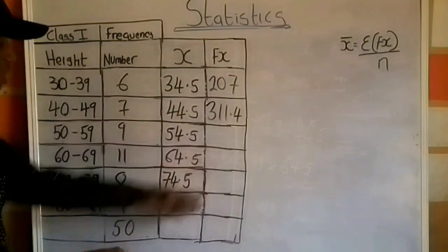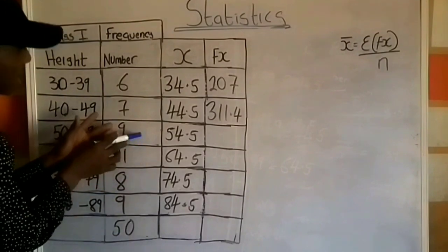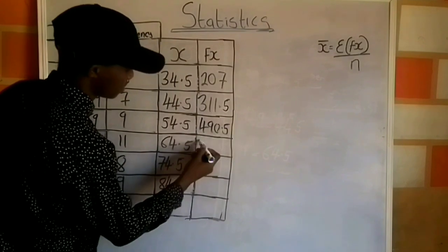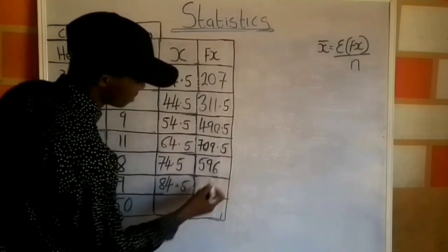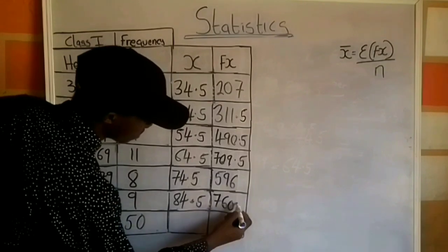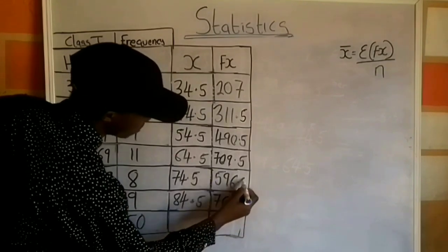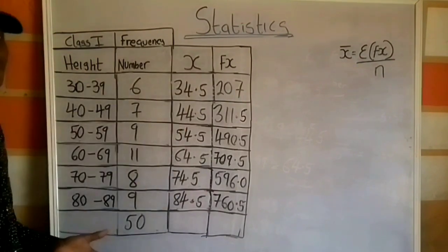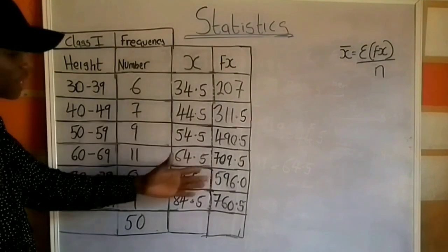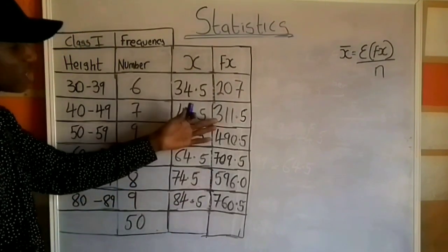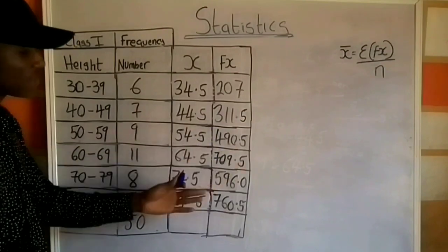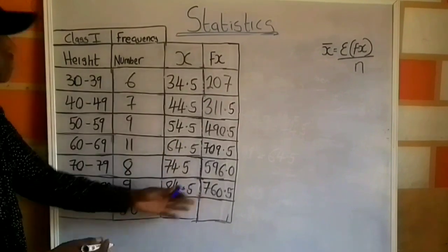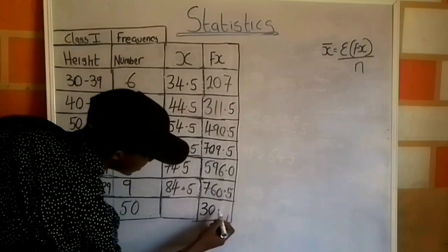For the remaining cells, multiply the frequency by the corresponding x value. After getting all fx values, I sum them: 207 + 311.5 + 490.5 + 709.5 + 596.0 + 760.5 = 3075.